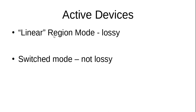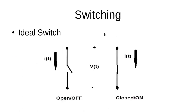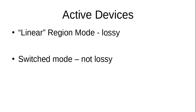If I use the BJT, for instance, it has an active region — what I'm calling a linear region. That region is generally going to be a lossy region. So anytime you're trying to operate it as a linear amplifier, a class A amplifier, this will be lossy. You will lose some power because if you're operating within the active region of a BJT, there are losses. What you need to do is operate it in switch mode.